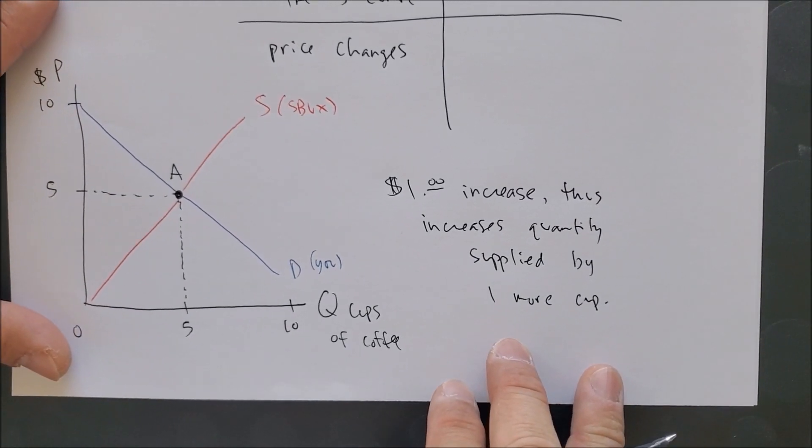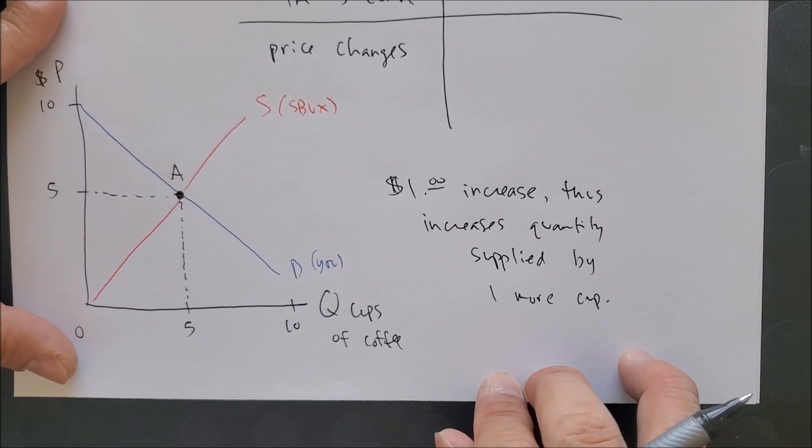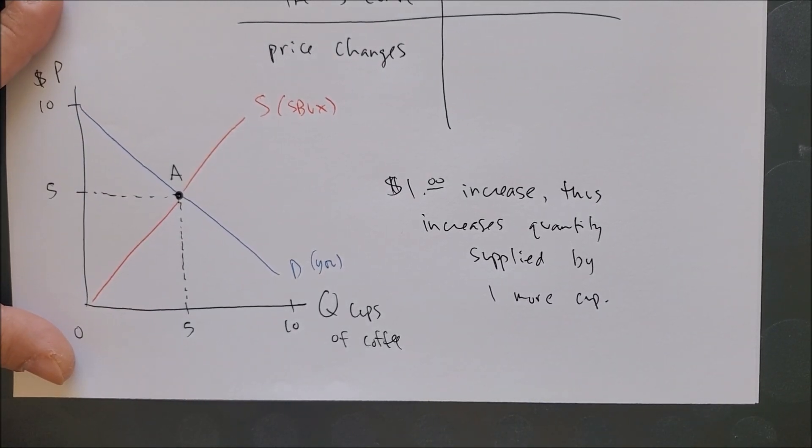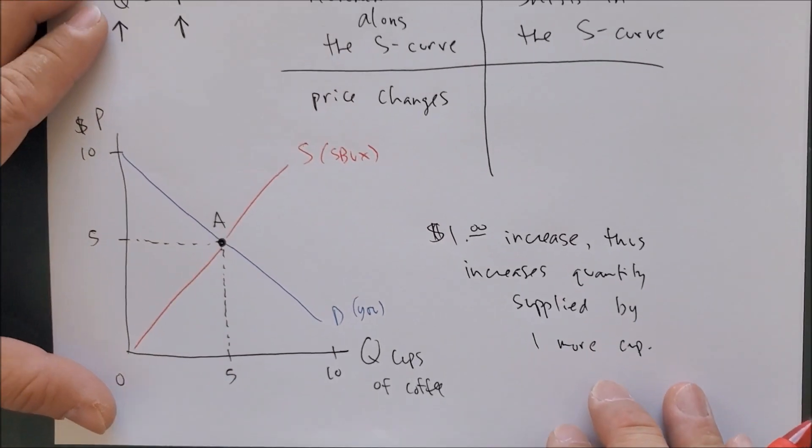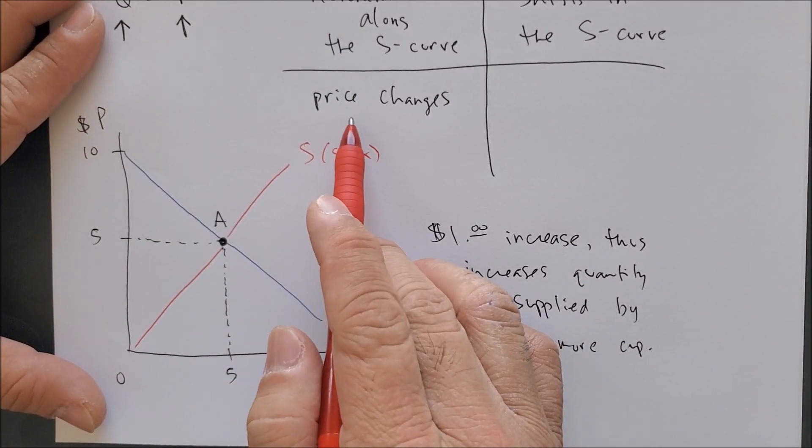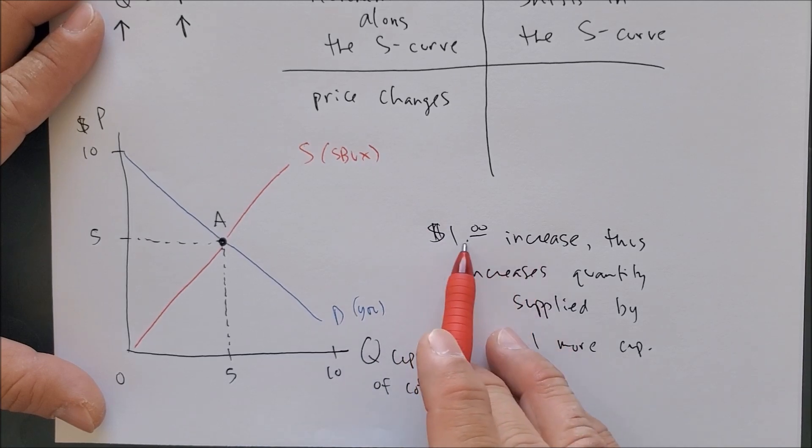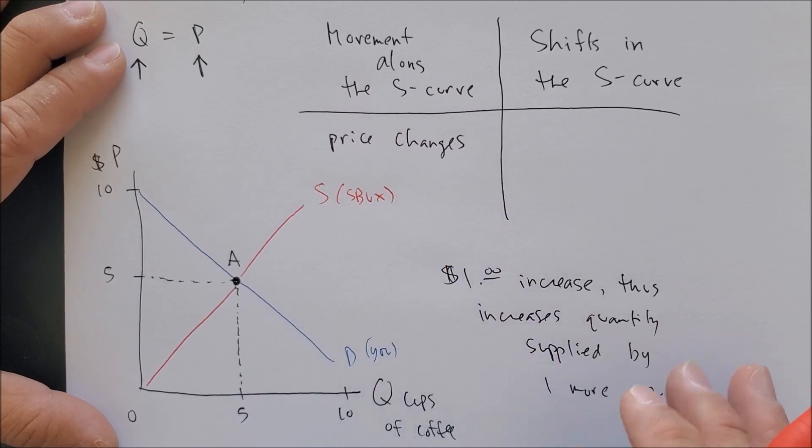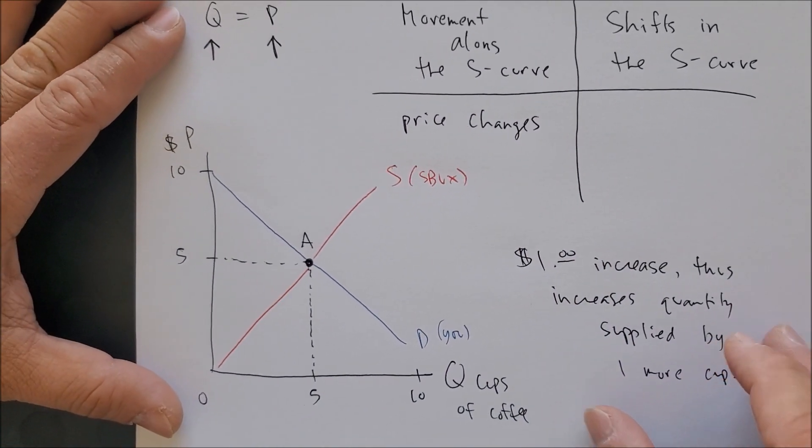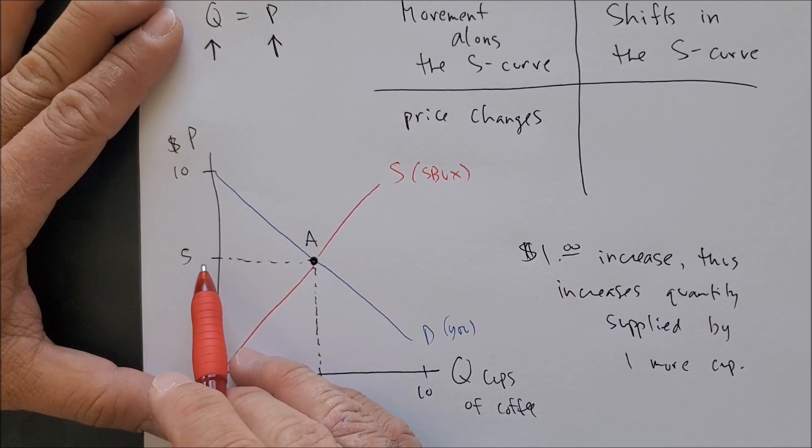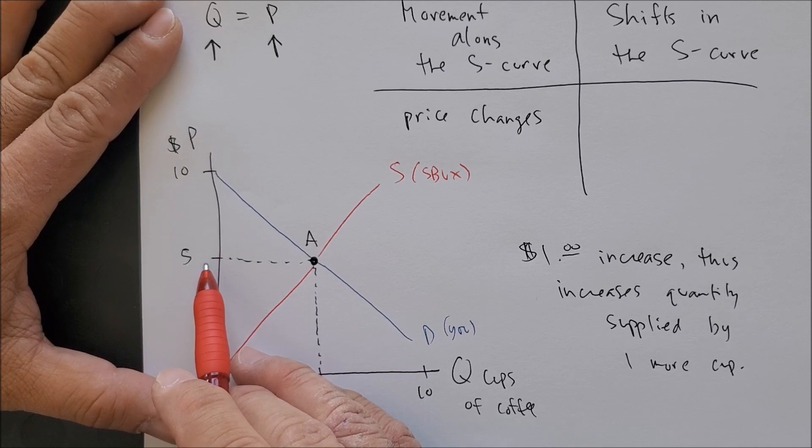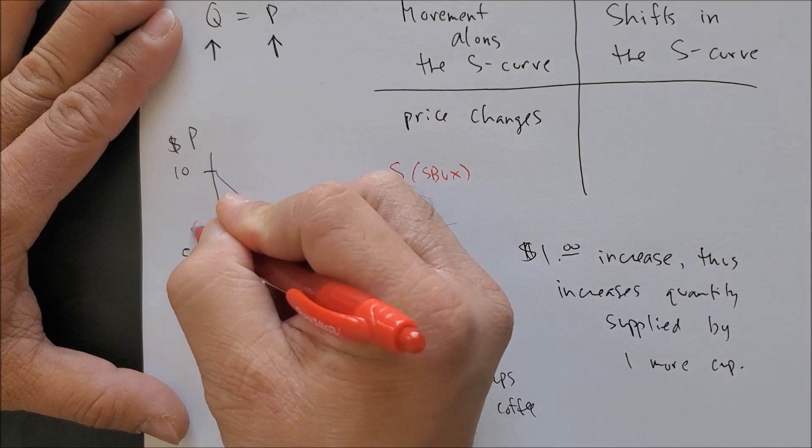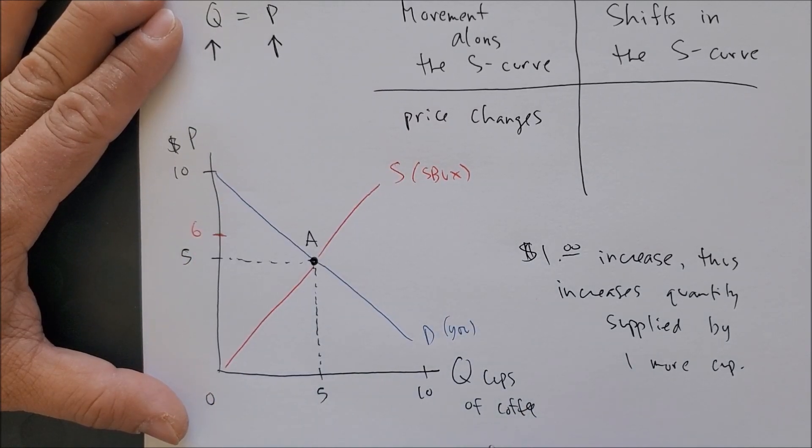Now we want to see how does a dollar increase affect the quantity supplied in our market. This is a price change, and a price change happening today is going to move along the supply curve. So we're going to focus on the y-axis - the price change. Price five dollars plus one dollar gives us six dollars.